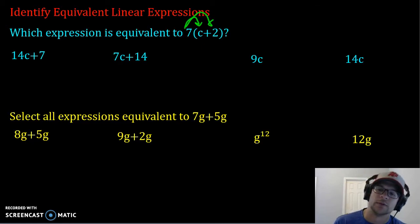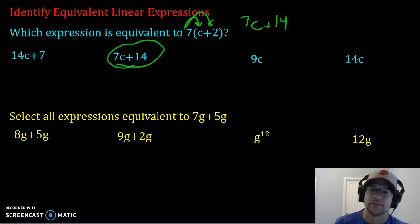So instead of 7 times the quantity c plus 2, we have 7c plus 7 times 2 is 14. Well, as you see right here, 7c plus 14 is the equivalent option.